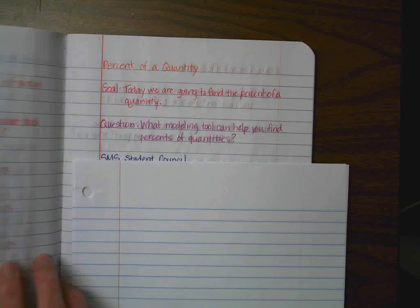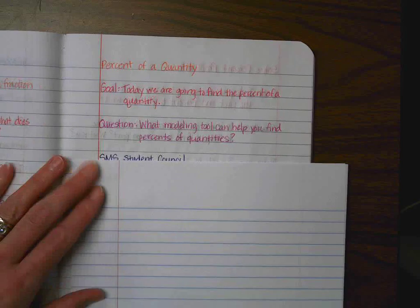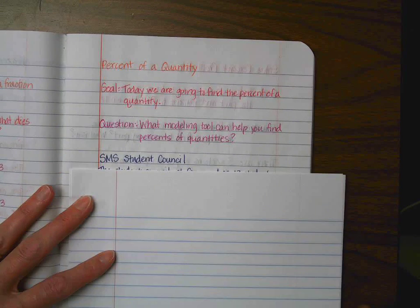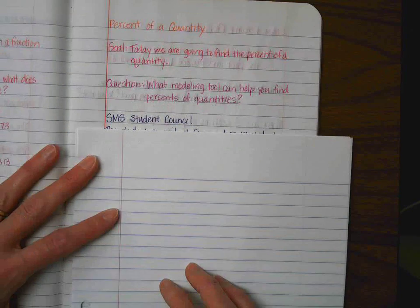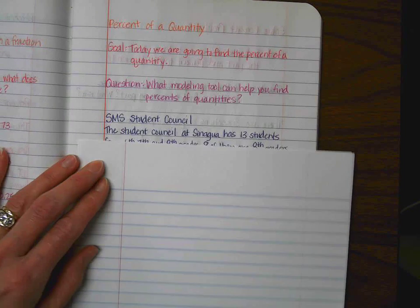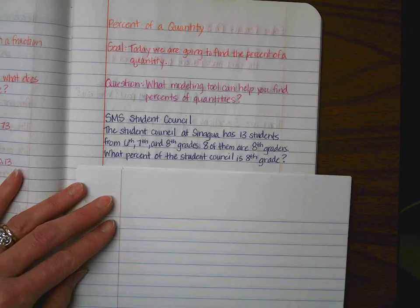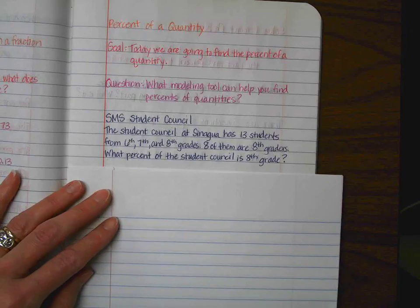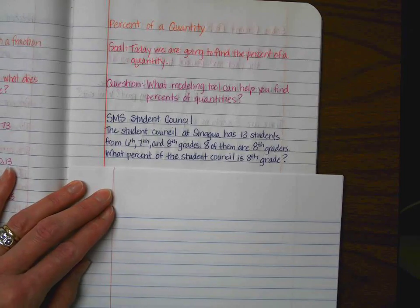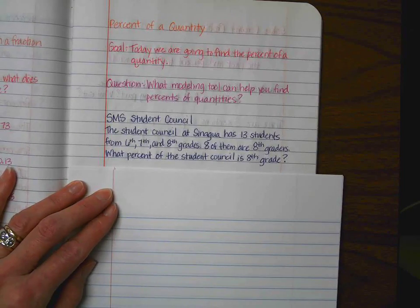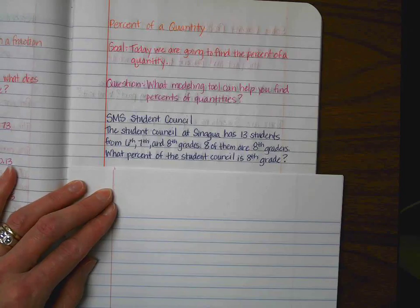And we're going to go straight into a practice problem to see what you can figure out with this, and we're going to be talking about SMS Student Council. It says, the Student Council at Sonawa has 13 students from 6th, 7th, and 8th grades. Eight of them are 8th graders. What percent of the Student Council is 8th grade?